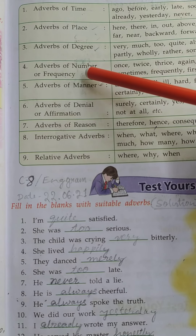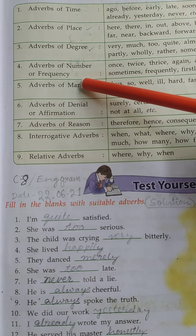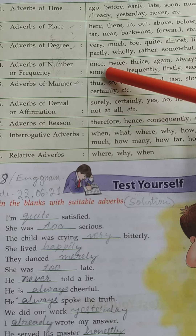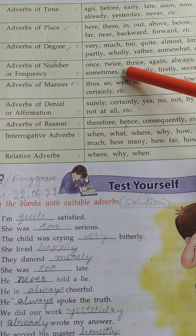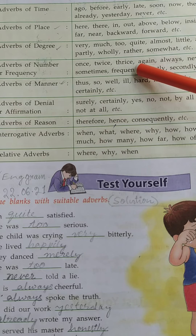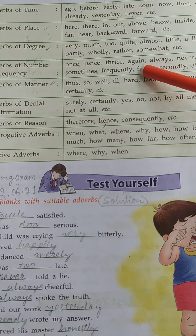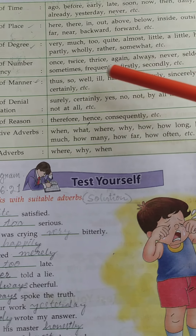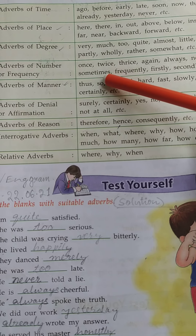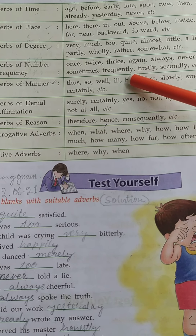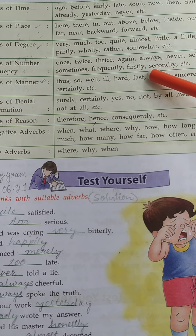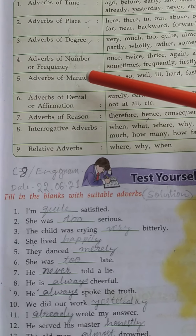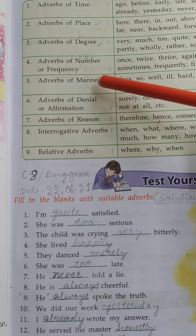Number 4: Adverbs of number or frequency. The examples are once, twice, again, always, never, seldom, sometimes, frequently, firstly, secondly, etc.